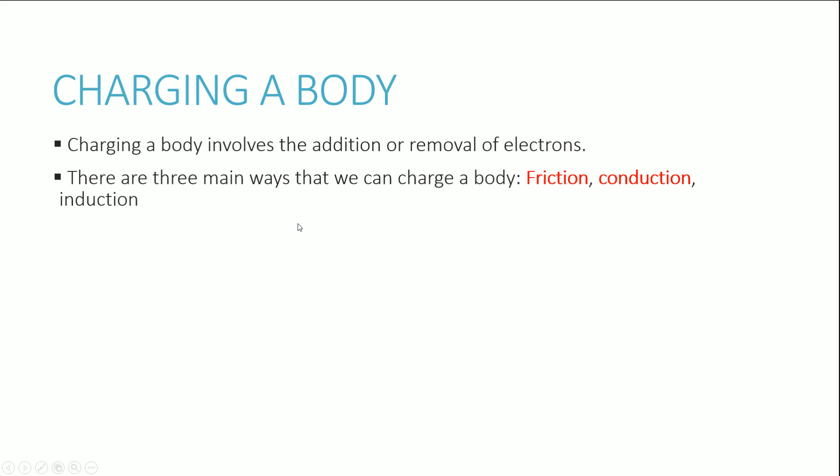Charging a body basically involves the addition or removal of electrons — that is a fundamental key you need to be aware of. When we charge something, we're giving it electricity; we can charge it to become positive or negative, but at the core, the reason something becomes charged is that it either gains or loses electrons. There are three main ways to charge a body: by friction, conduction, and induction — but for your course, you really only need to know friction and conduction.